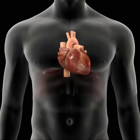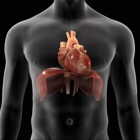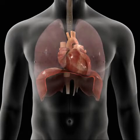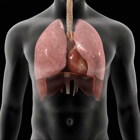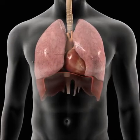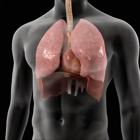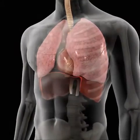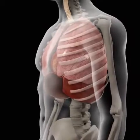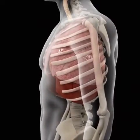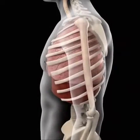The heart is located in the thorax, resting on the muscular diaphragm, between the two lungs. It is part of the anterior mediastinum, together with the thymus, the trachea, and the main bronchi, left and right.